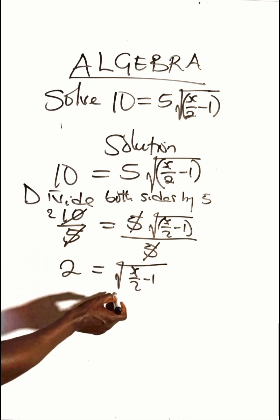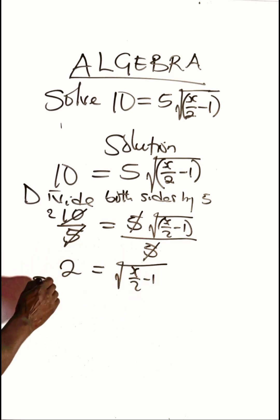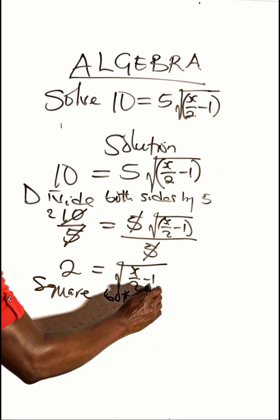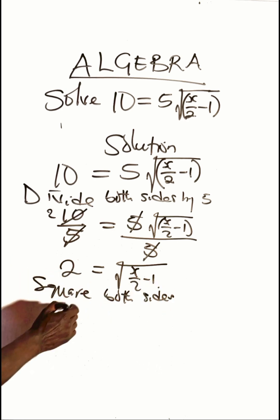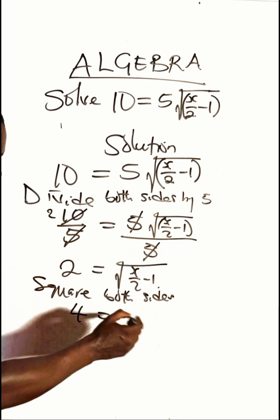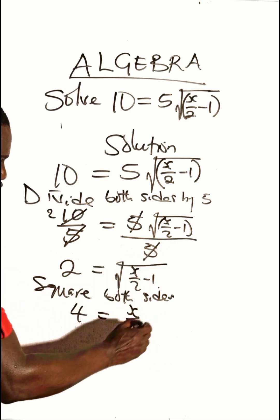Now to remove this square root sign, we are going to square both sides. 2 squared is 4. Then squaring the square root to remove it entirely, that will be x over 2 minus 1.